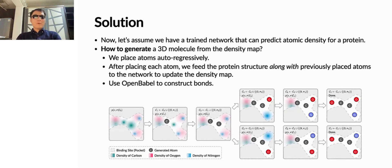Now, let's assume we have a trained network that can predict atomic density for a protein. The problem is how to generate a 3D molecule from the density map. We designed to place atoms one by one autoregressively. It is worth noting that after placing each atom, we feed the protein structure along with previously placed atoms to the network to update the density map in order to capture dependencies between generated atoms. Finally, we use Open Babel to construct bonds between atoms.